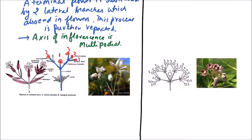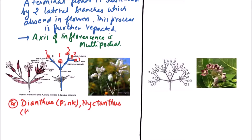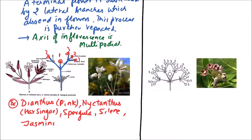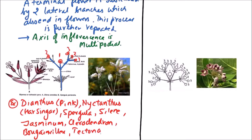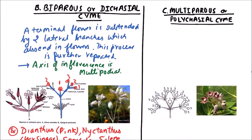The examples include Dianthus, also known as pink; Nyctanthes, also known as jasmine; Clerodendron; Bougainvillea; and Tectona, i.e. teak. So this is dichasial or biparous cyme.